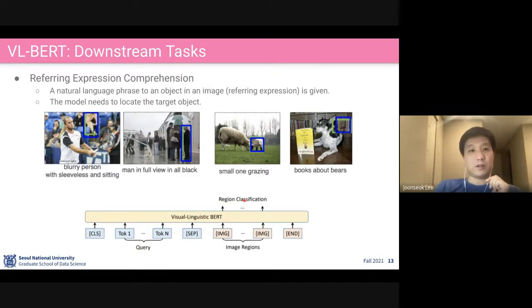Then they classify based on the region representation at the end of these image tokens—whichever has the highest value will be chosen as the answer. They will be trained based on the ground truth answer.